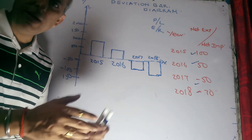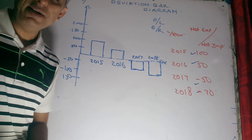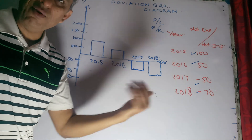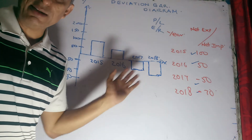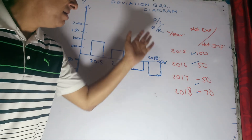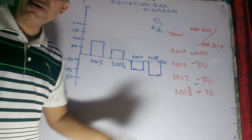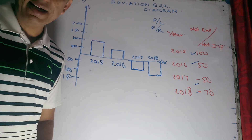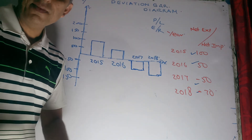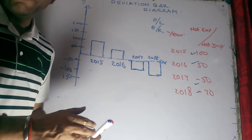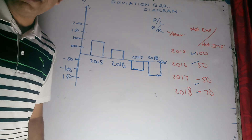That's the deviation bar diagram for you, students. Whenever you encounter situations where you have two contrary variables naturally moving in opposite directions — one superseding the other — switch to deviation bar diagrams. A few examples: exports and imports, expenses and revenue, profit and loss. I hope all of you understood it. Thank you.